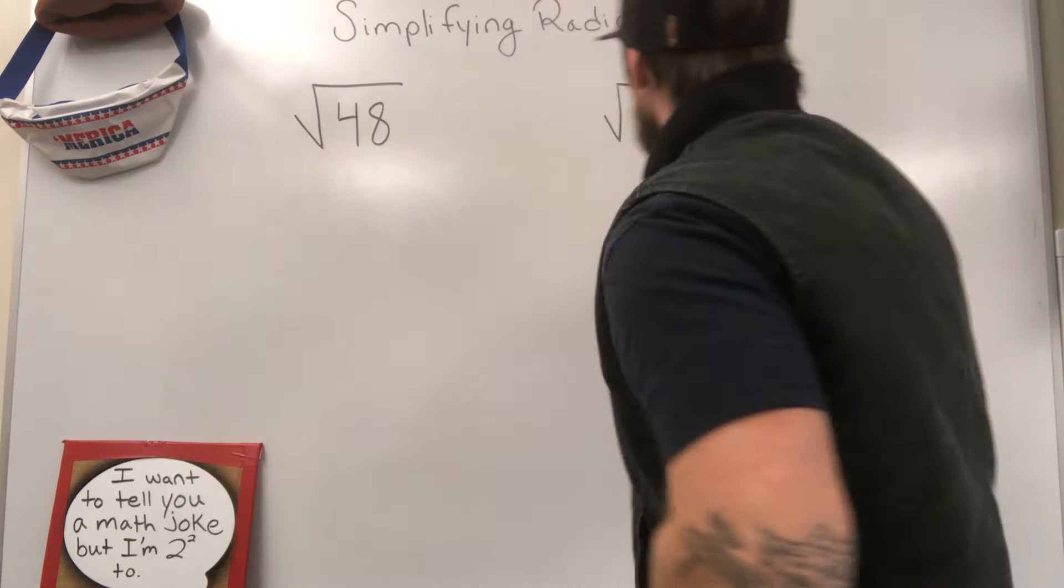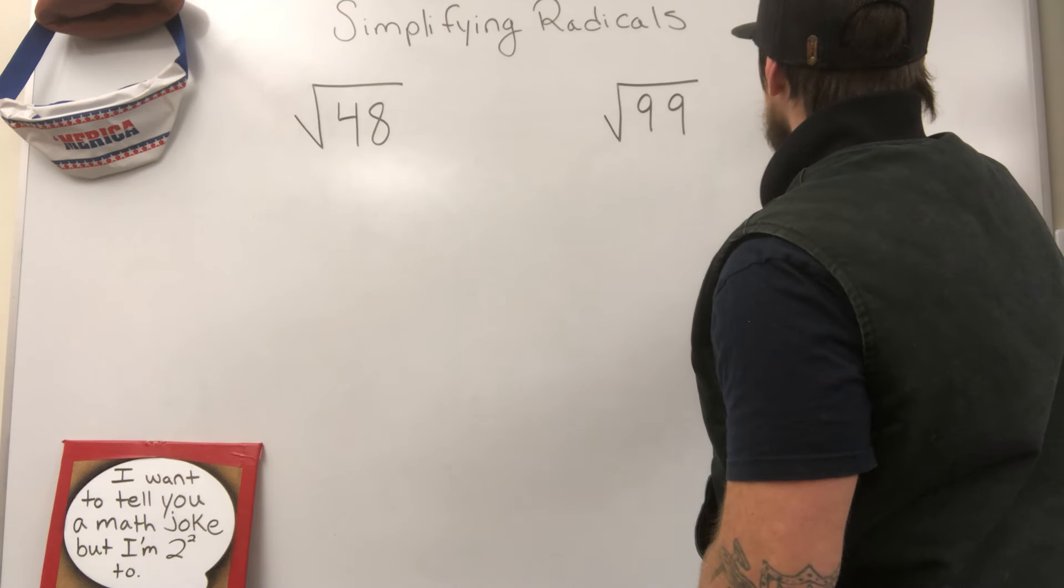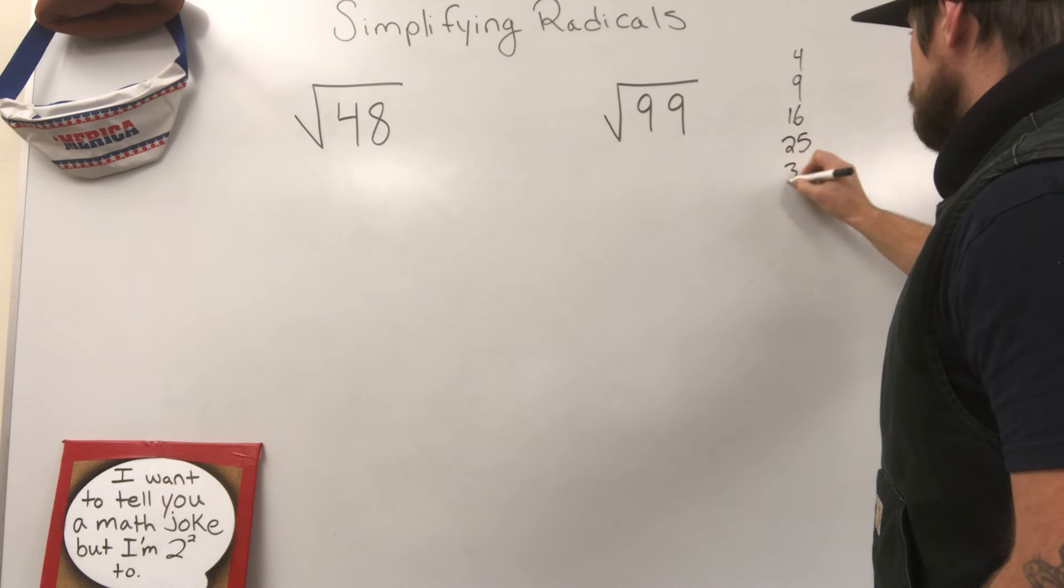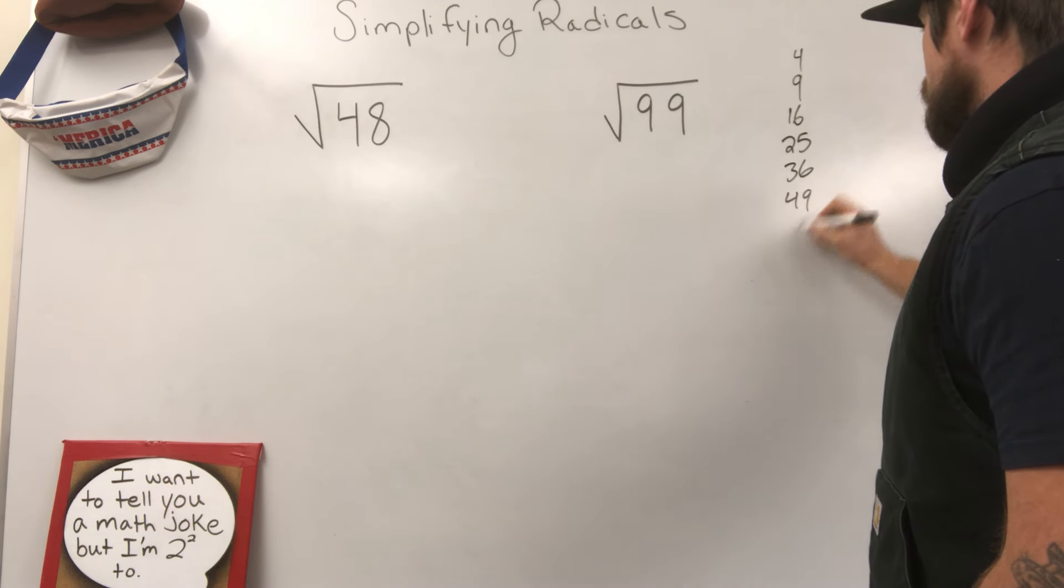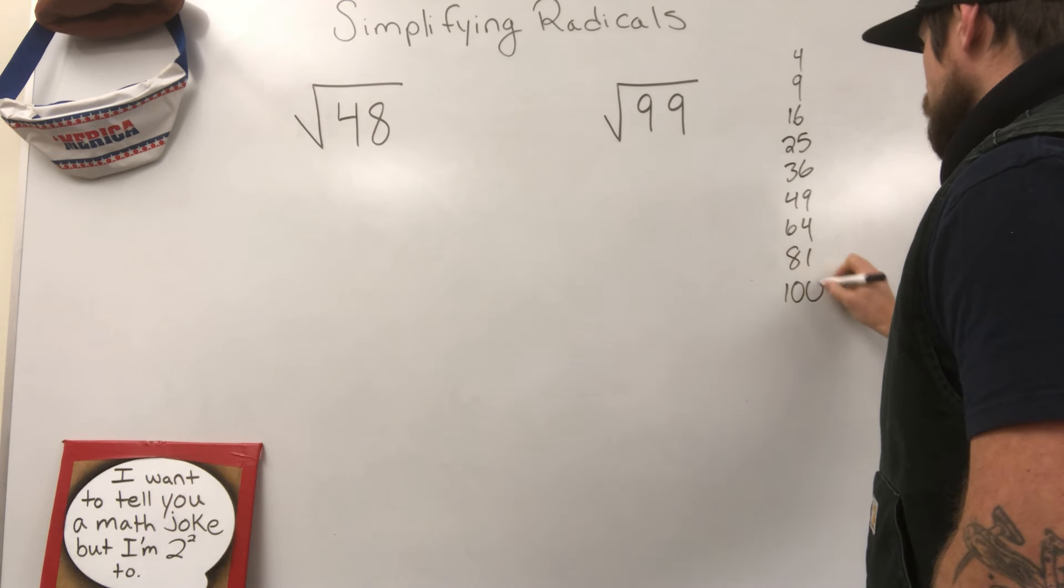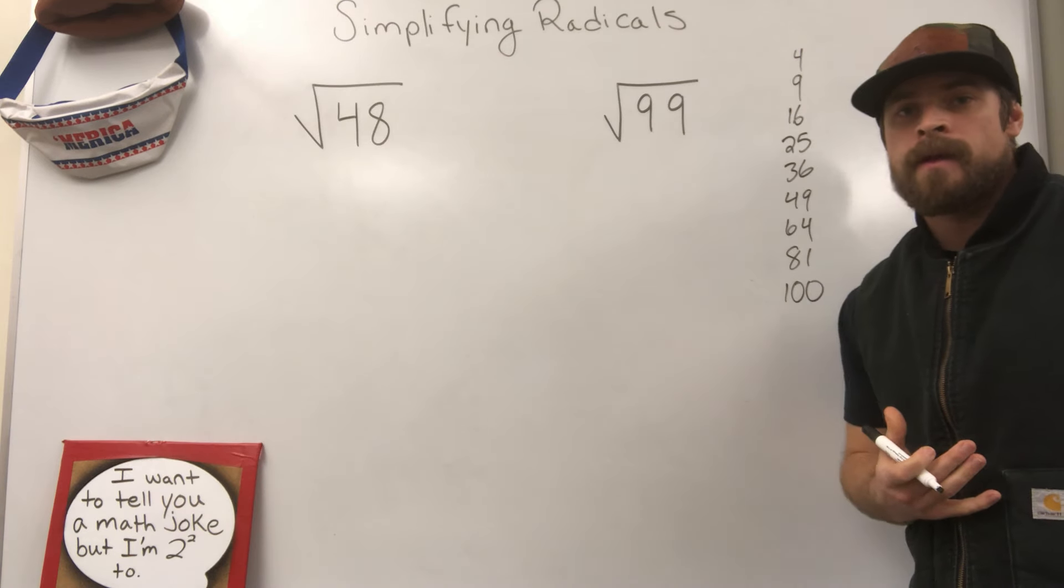Step one, you're going to want to list out all of your perfect squares. 2 times 2 is 4. 3 times 3 is 9. 4 times 4 is 16. 25, 36, 49, 64, 81, 100. These are all those nice, neat, perfect squares that we know all about.